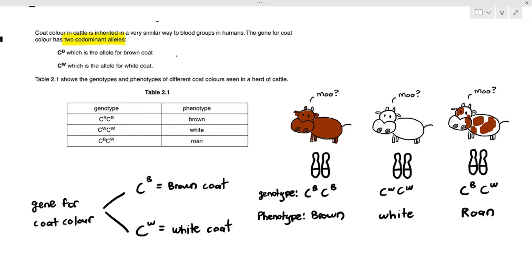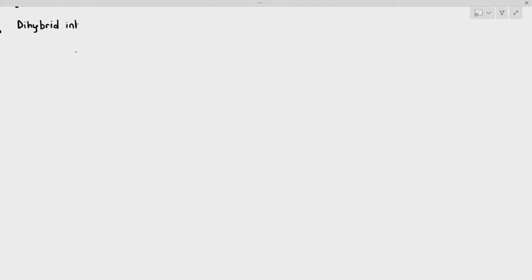For this part of the video, however, what we are going to be looking at is something known as dihybrid inheritance. Dihybrid inheritance just means the inheritance of two genes. So we're going to make it a little bit more complicated. Instead of just looking at one gene, we are going to look at two genes.